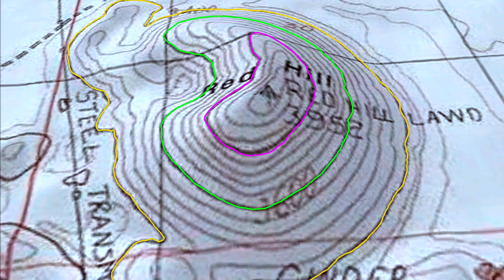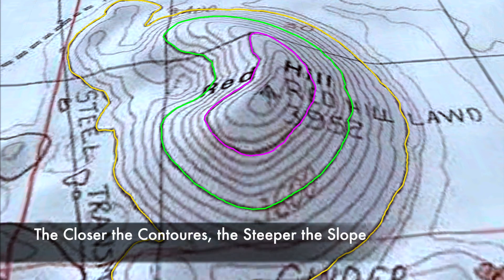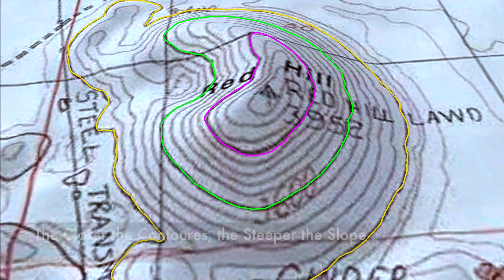A few things that we can observe here: each contour line has its own elevation, and contour lines cannot cross or touch other contours. We also know that the closer the lines are to one another, the steeper the topography or the gradient will be.